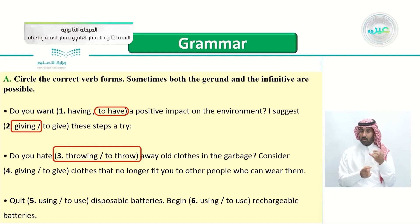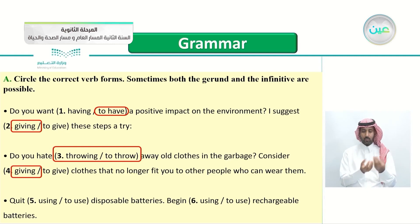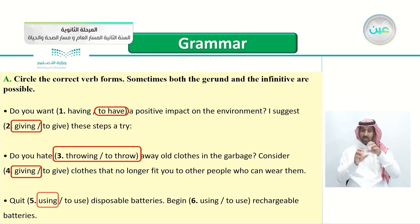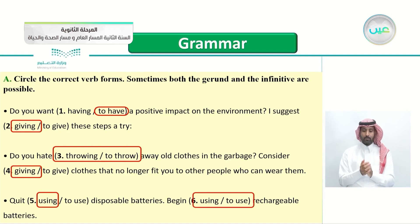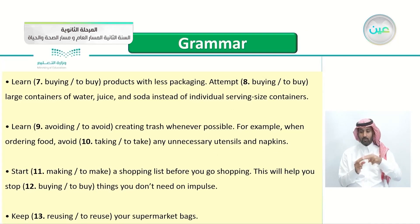Number 4: consider comes before the gerund — 'Consider giving clothes that no longer fit you to other people.' Number 5: quit — 'Quit using disposable batteries.' Number 6: begin — both forms work: 'Begin using or begin to use rechargeable batteries.' Number 7: learn — 'Learn to buy products with less packaging' — infinitive.